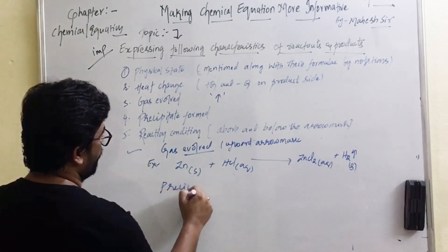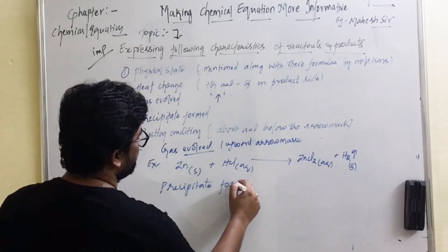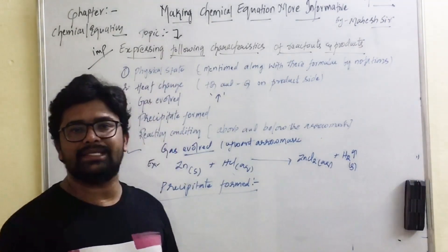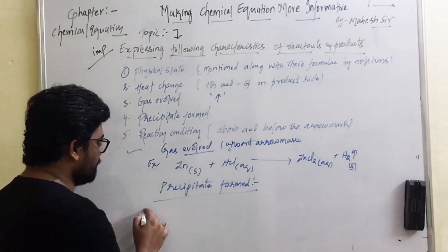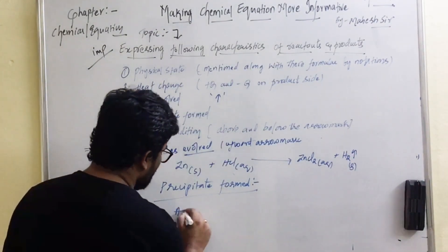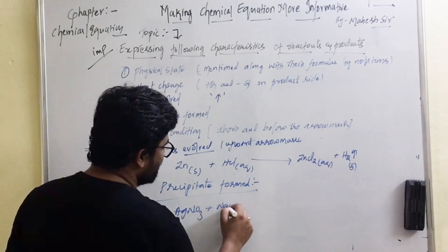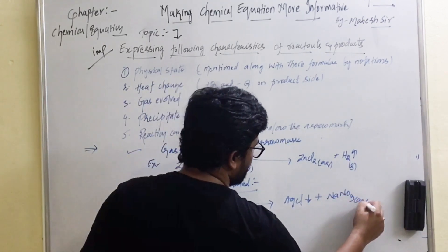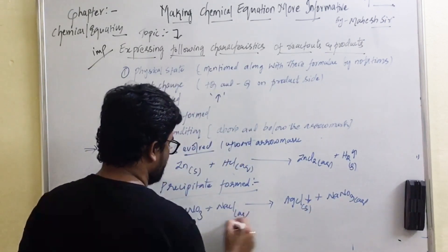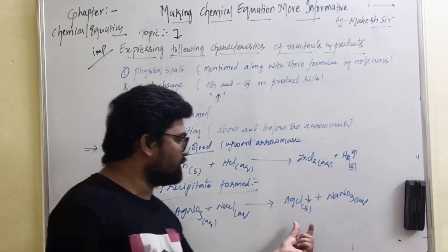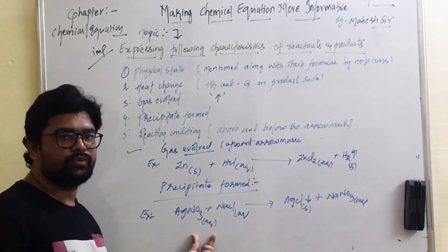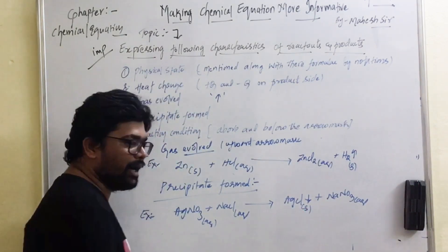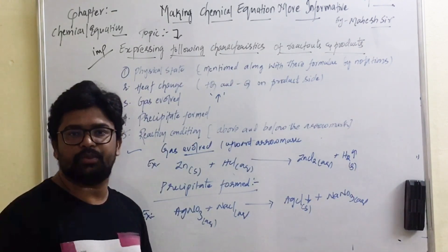The next characteristic is precipitate formation. How do we express a precipitate formed during a chemical reaction? A precipitate is an insoluble substance formed as a product after a chemical reaction. For example: AgNO₃ + NaCl gives AgCl (precipitate) + NaNO₃. Here AgCl is the precipitate formed during the reaction. The formation of a precipitate is expressed by a downward arrow mark.